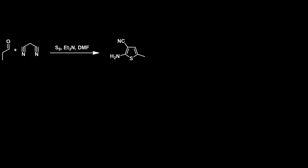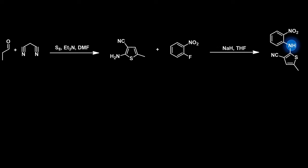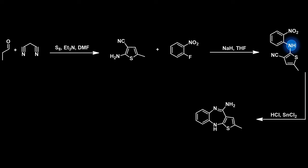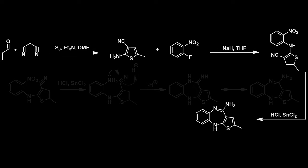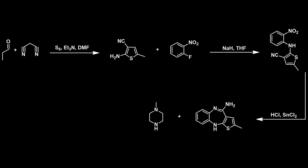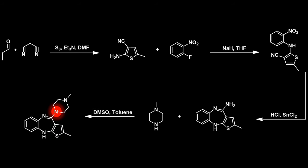Next, the intermediate is reacted with 2-fluoronitrobenzene in an SNAr reaction. The amino group of the thiophene is first deprotonated by sodium hydride, increasing its reactivity as a nucleophile. Cyclization can occur once the nitro group has been reduced using tin chloride under acidic conditions. The aniline group that has been formed can attack the nitrile group, forming an amidine group and closing the seven-membered ring. This can then undergo tautomerization to form the endocyclic amidine. The final step involves a substitution reaction using N-methylpiperazine as a nucleophile to react with the amidine group.